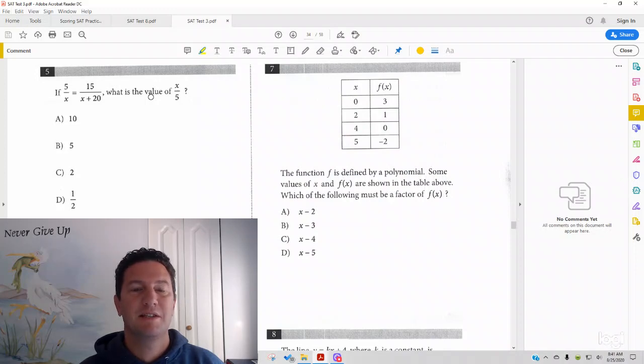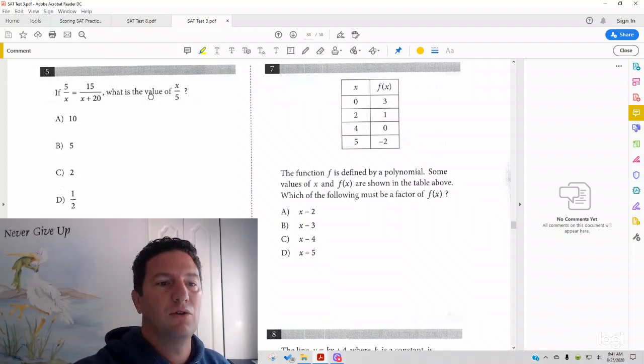Today we're going to look at Test 3, Section 3, Number 5, which reads: If 5 over x equals 15 over x plus 20, what is the value of x over 5?